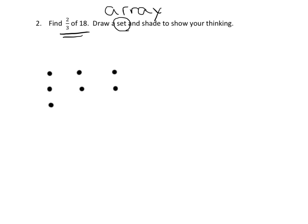So 1, 2, 3, 4, 5, 6, 7, 8, 9, 10, 11, 12, 13, 14, 15, 16, 17, 18. So there's our array of 18 dots. And then because I did it, I counted by 3s, you know, I put 3 in each row, that automatically tells us that each column is 1 third.